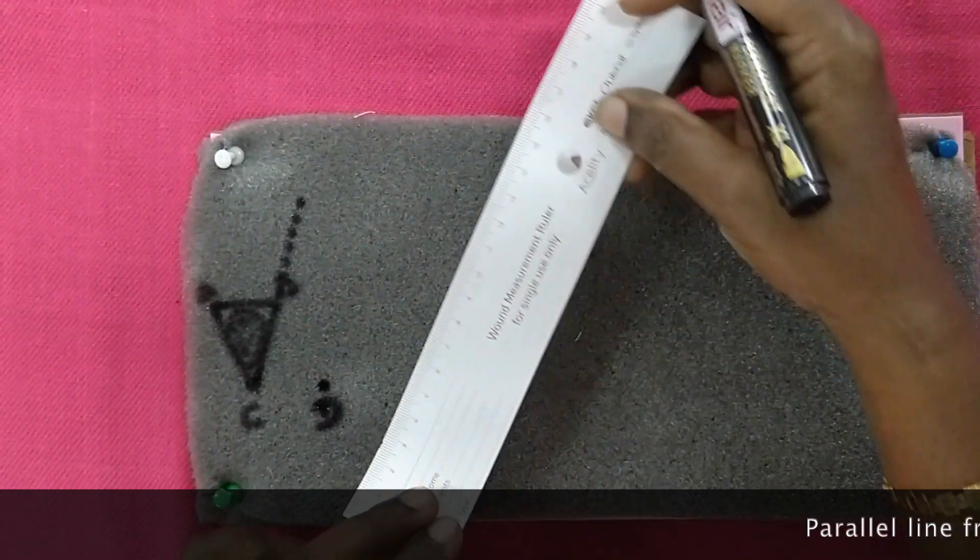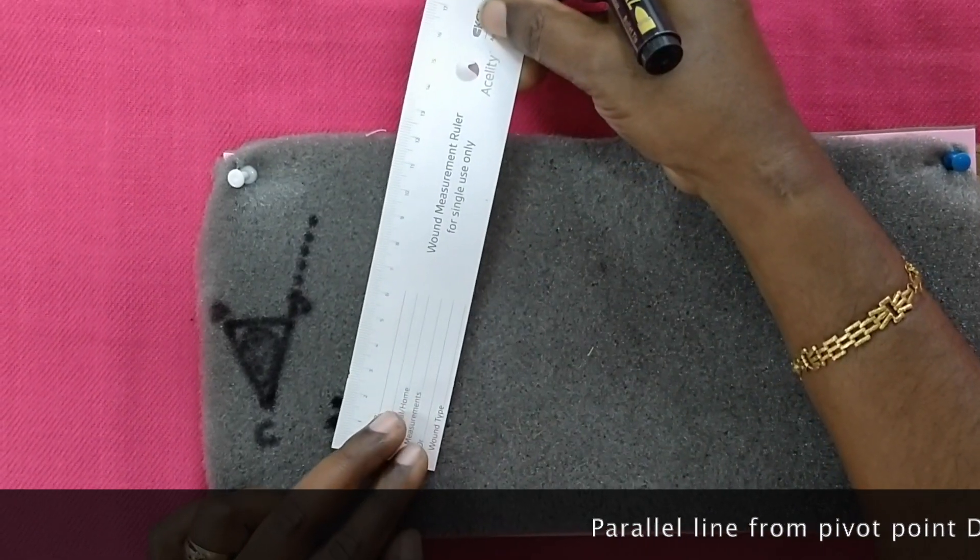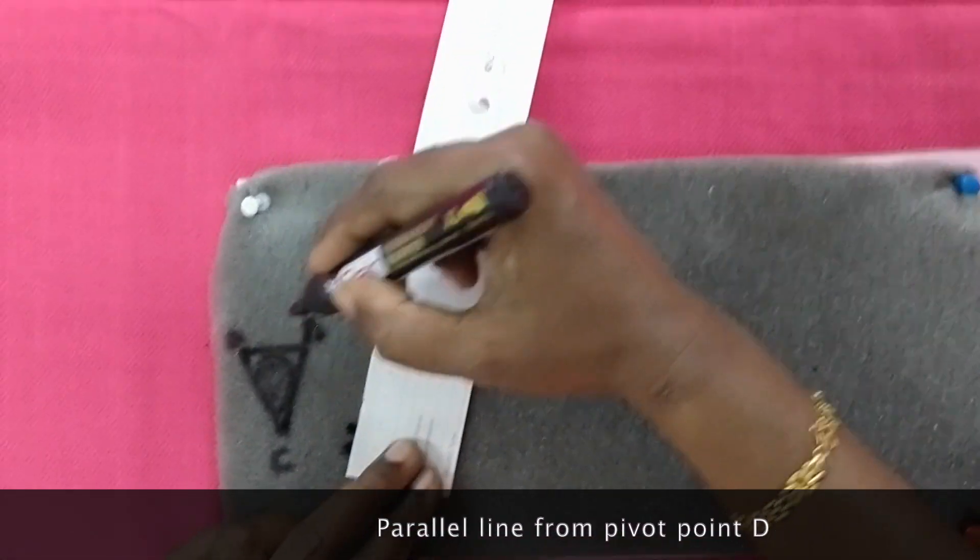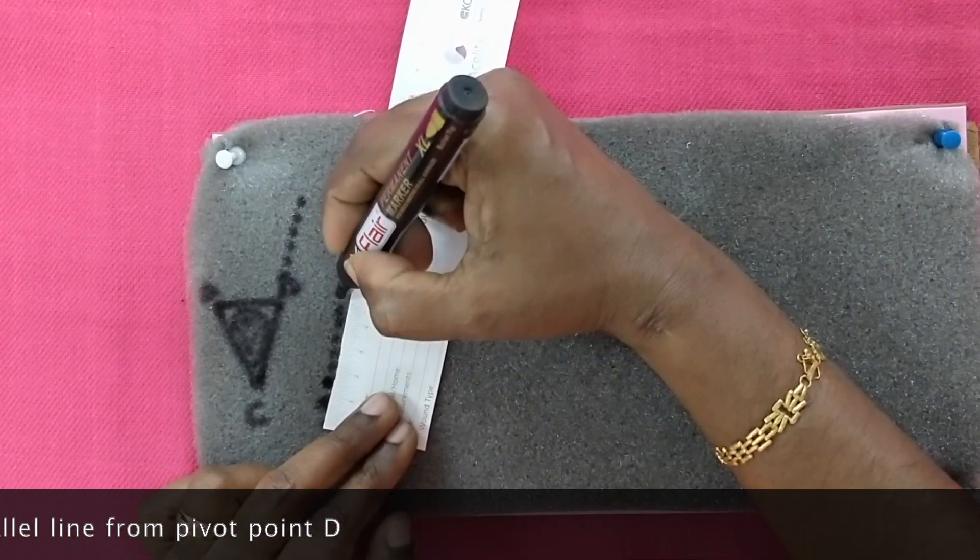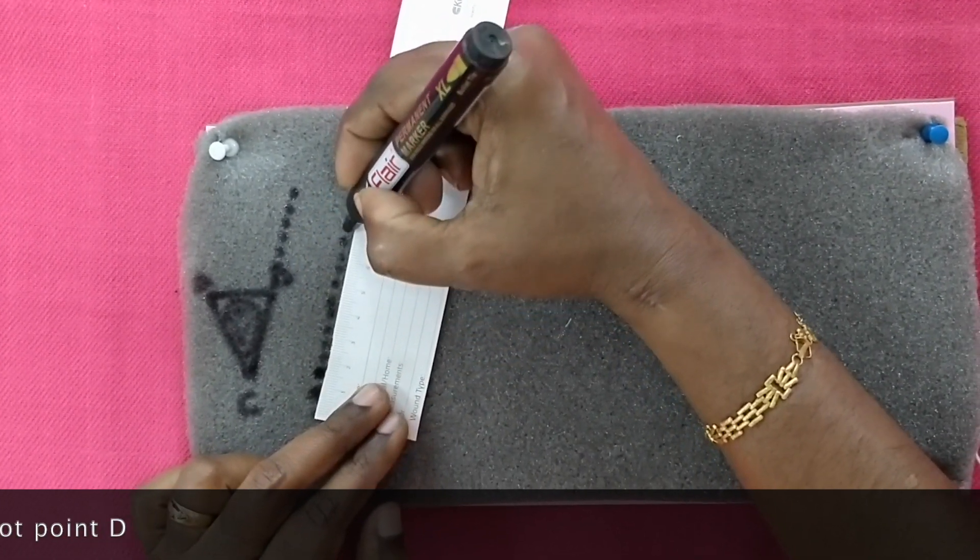From the pivot point D, we mark a line parallel to the line that we have drawn extended from CB. Now this will represent the lateral edge of the transposition flap.